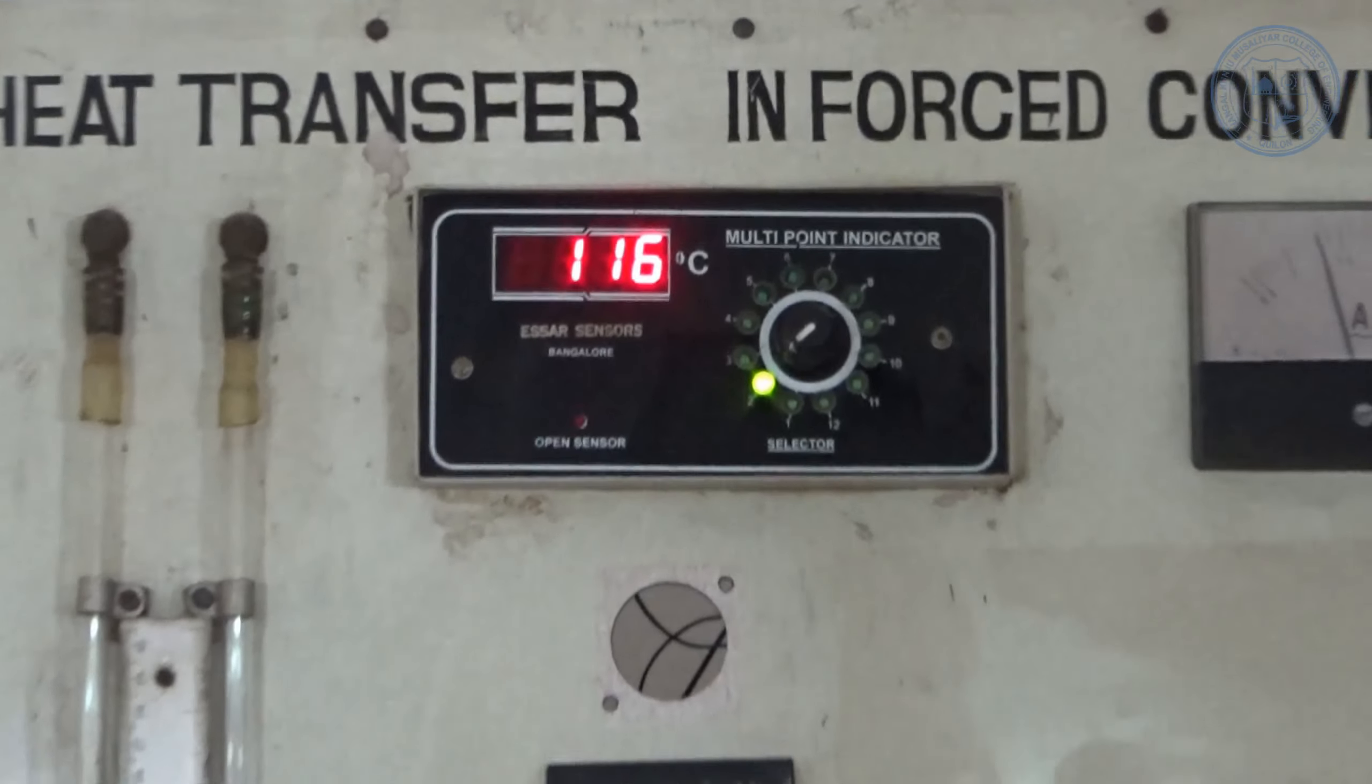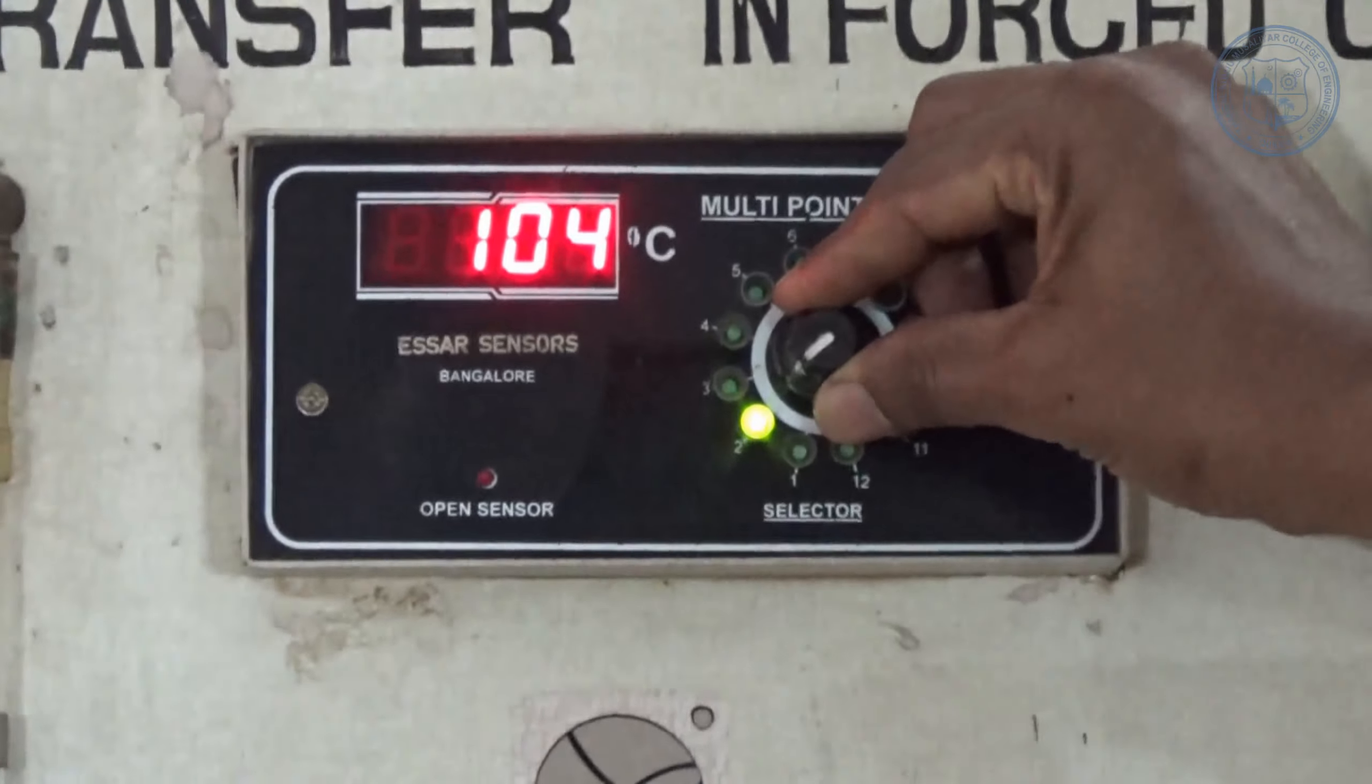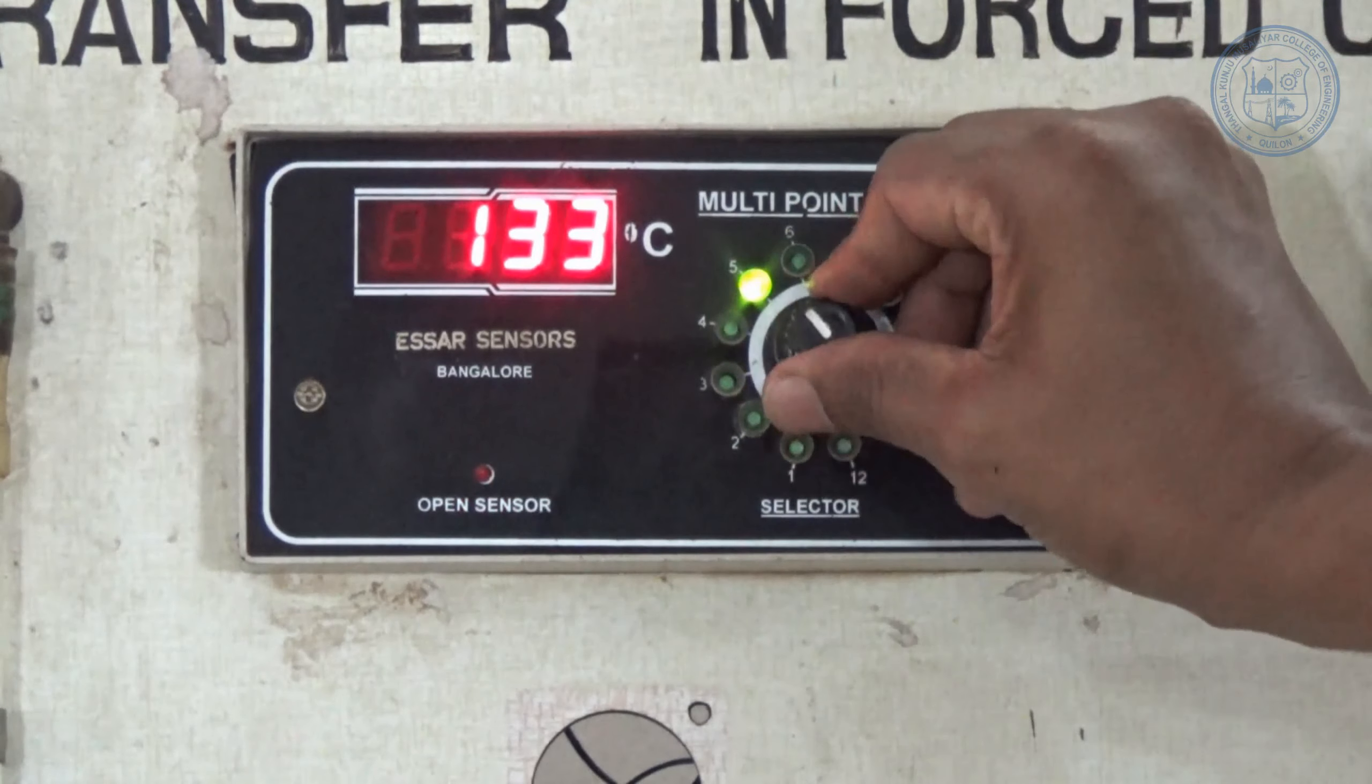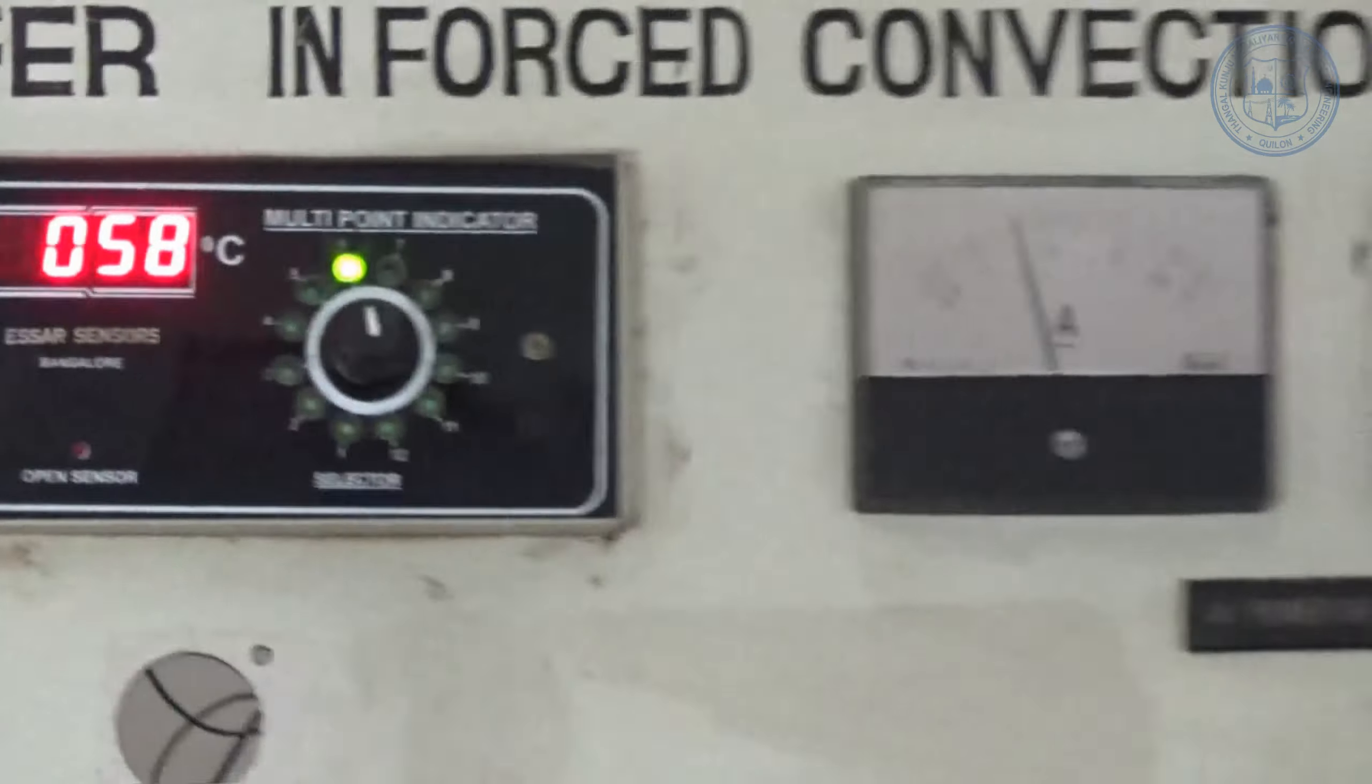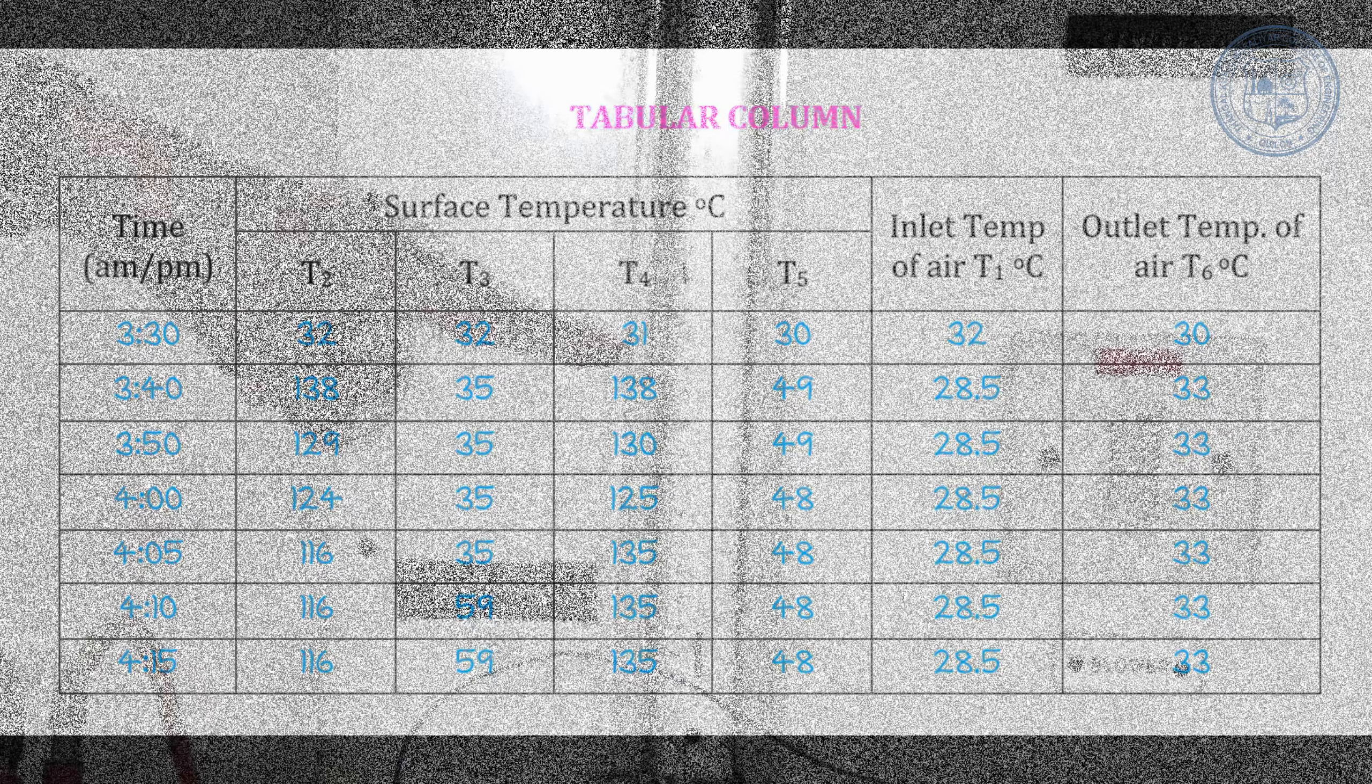Repeat the recording of readings of all thermocouples at regular intervals until steady state has been reached. Tabulate all the readings. These steady state values are used to calculate the convective heat transfer coefficient of forced convection.